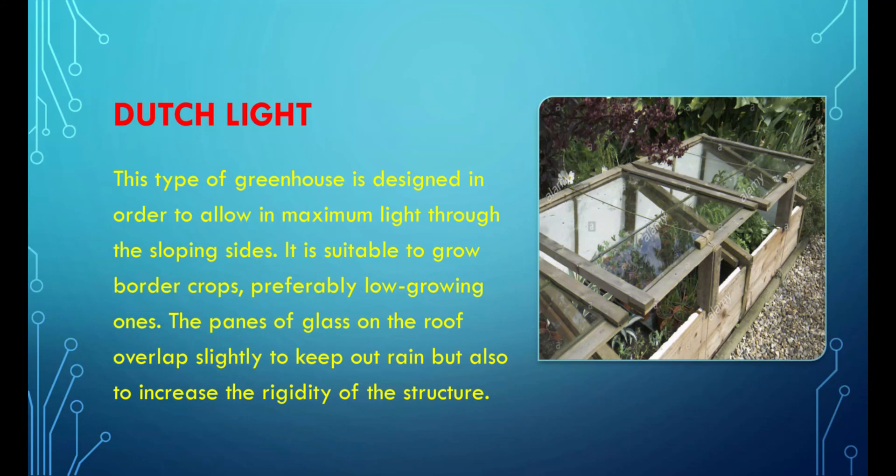The Dutch Light greenhouse is designed to allow in maximum light through its sloping sides. It is suitable to grow border crops, preferably low-growing ones. The panes of glass on the roof overlap slightly to keep out rain but also to increase the rigidity of the structure.